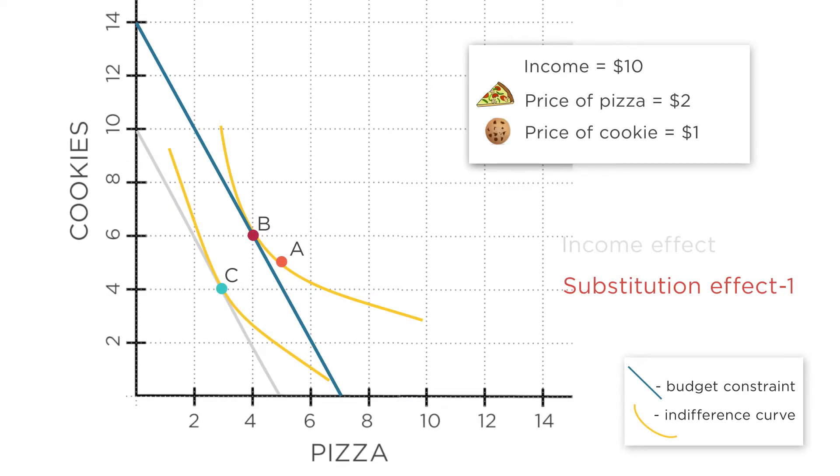So we've now illustrated the substitution effect and proven why it's always in the same direction. What about the income effect? The movement from point A to point B is the substitution effect. So the rest of the movement from B to C has to be the income effect. And this makes sense.